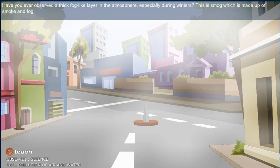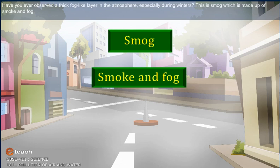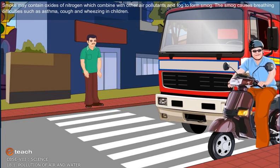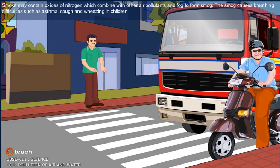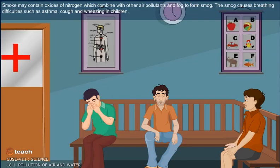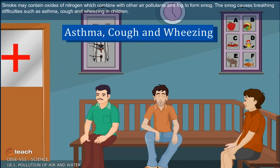Have you ever observed a thick fog-like layer in the atmosphere, especially during winters? This is smog, which is made up of smoke and fog. Smog may contain oxides of nitrogen, which combine with other air pollutants and fog to form smog. The smog causes breathing difficulties such as asthma, cough and wheezing in children.